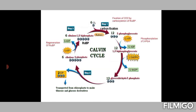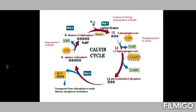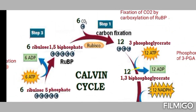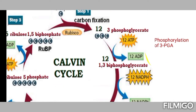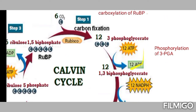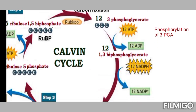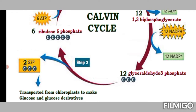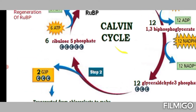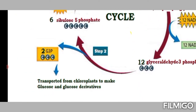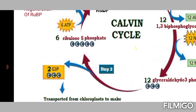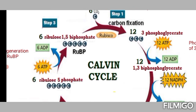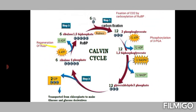Looking at the figure illustrating the Calvin cycle: Step 1 is carbon fixation, where 3-phosphoglycerate, 1,3-bisphosphoglycerate, and glyceraldehyde 3-phosphate are formed. Step 2 involves condensation of glyceraldehyde 3-phosphate to form glucose and other derivatives. Step 3 is the regeneration of ribulose 1,5-bisphosphate.